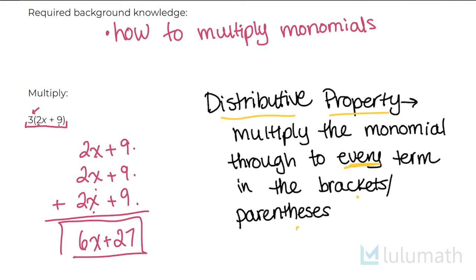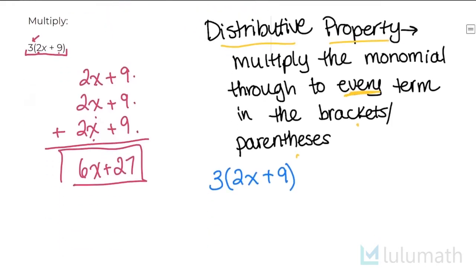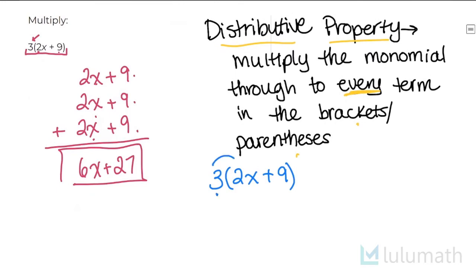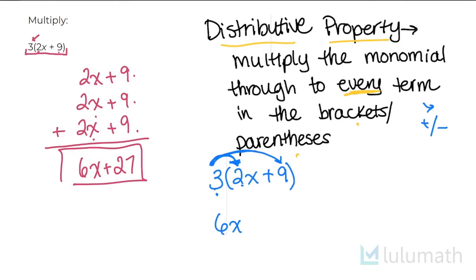So let's write this example down again: 3 multiplied by 2x plus 9. I'm going to take this 3 on the outside and multiply it through to every term. Terms are separated by plus or minus signs, so 2x is one term and 9 is a second term. I take the 3 and multiply it through to 2x — 3 times 2x is 6x. Then I multiply the 3 through to the 9 — 3 times 9 is 27. So you end up getting the same answer; this is just a shorter, quicker way of doing it.